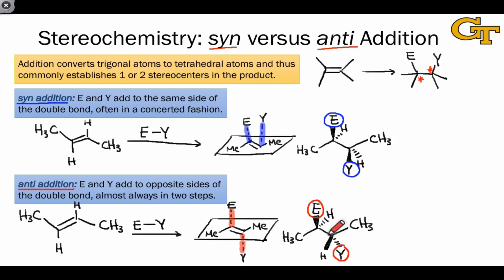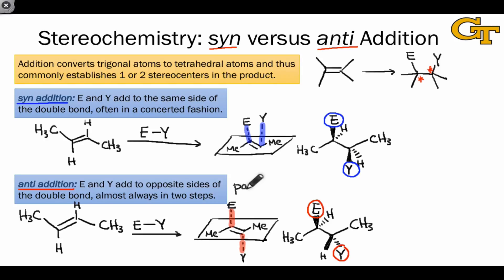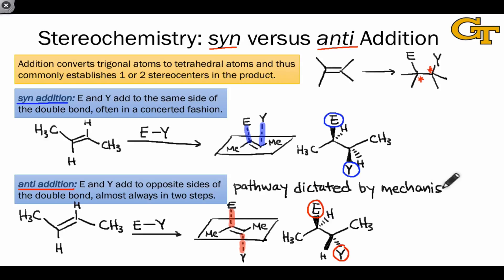Most addition reactions are stereoselective or stereospecific for either syn or anti-addition, although some reactions give a mixture of the two. When it comes to stereochemistry in electrophilic addition reactions, the favored pathway is strongly dictated by the mechanism. The stereoselective or stereospecific outcome is an important aspect of the mechanism that we want to take note of as we explore the specific mechanisms of electrophilic additions.